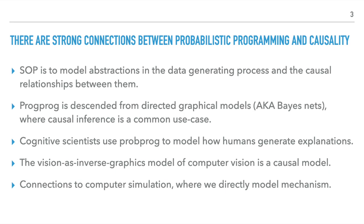Probabilistic programming is descended from directed graphical models, also known as Bayes Nets, where causal inference is a common use case. Cognitive scientists use probabilistic programming to model how humans generate explanations. The vision as inverse graphics model of computer vision is a causal model. There are connections to computer simulation where we directly model mechanism.